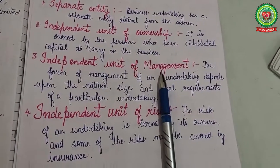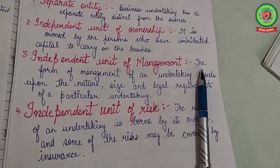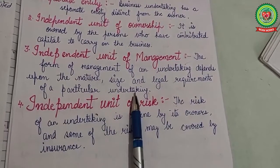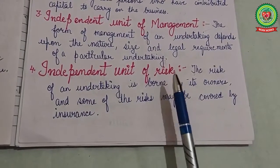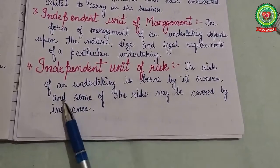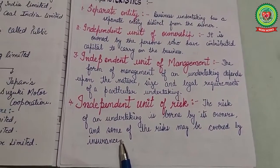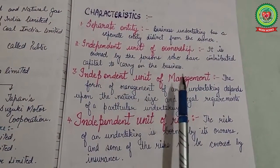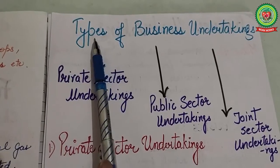Next characteristic is independent unit of management — every business undertaking has its own independent management, which depends upon the nature, size, and legal requirements of the particular undertaking. Next is independent unit of risk — the risk of an undertaking is borne by its owners, and some risks may be covered by insurance. So the four characteristics are: separate entity, independent unit of ownership, independent unit of management, and independent unit of risk.